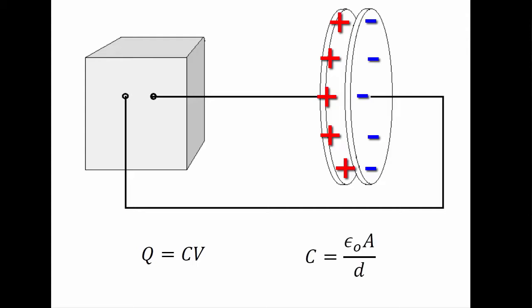It's epsilon naught A over D. A is the area of one of the plates, D is the distance between the plates. So we know how much charge is on there, and we should be able to calculate what the attractive force should be between the plates.